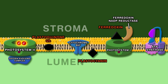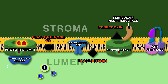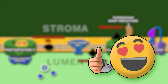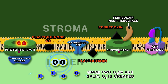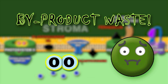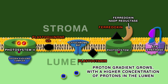Meanwhile, the oxygen evolving complex becomes unstable due to the excited electron, and is now able to split water molecules through photooxidation. This brings two key benefits: first, the two electrons used by Photosystem II are replaced; and second, the splitting creates oxygen as a by-product.